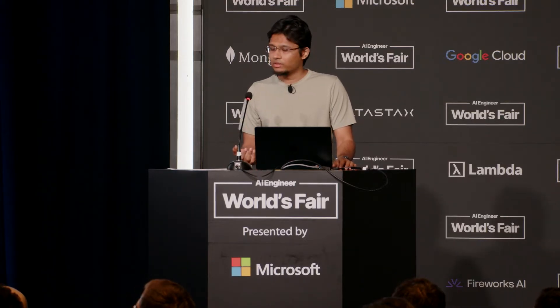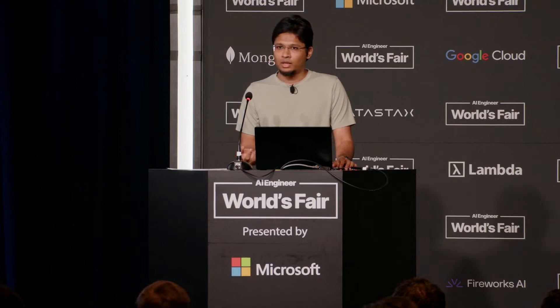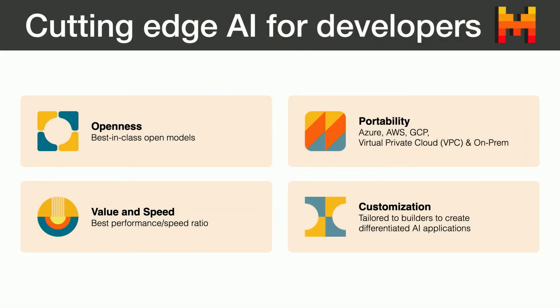We try to optimize for the performance-to-speed ratio. Our models are particularly good at getting the best performance out of a particular size. We want our models to be customizable. We are building our platform with all the libraries and tools to customize our models depending on your application. We recently released the Mistral fine-tune open source library, which can be used to fine-tune any of our open source models, and we also have a fine-tuning API on our platform. We also released Mistral Inference, which is the inference library — again, open source.